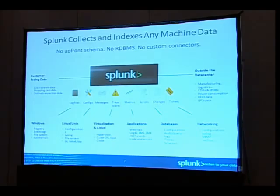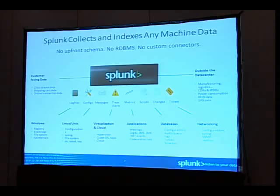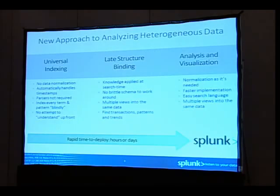We can collect data from many different sources — Windows, Linux, other Unixes — monitoring the registry, configurations, and files in the file system. We can collect from virtualized environments, from hypervisor and guest OS logs, from applications, and we can pull databases and index rows of data. We can monitor networks. We have a universal indexing system where we don't require data normalization.